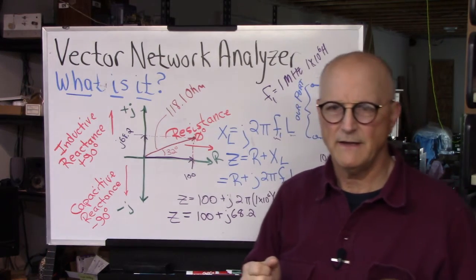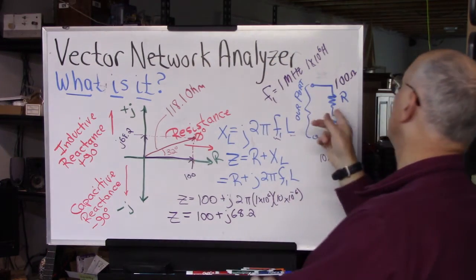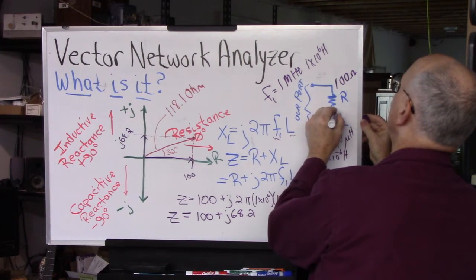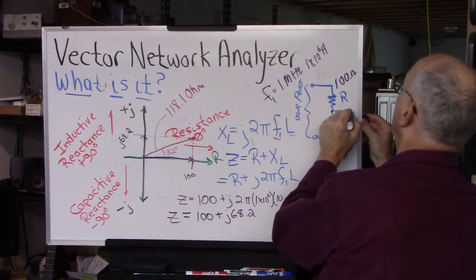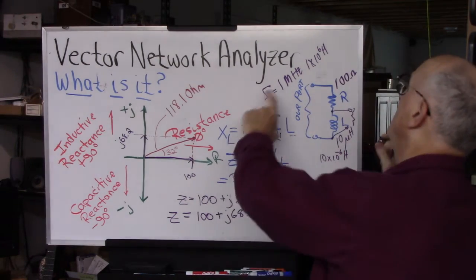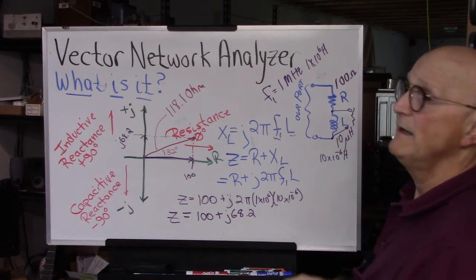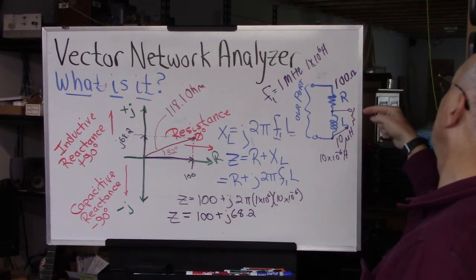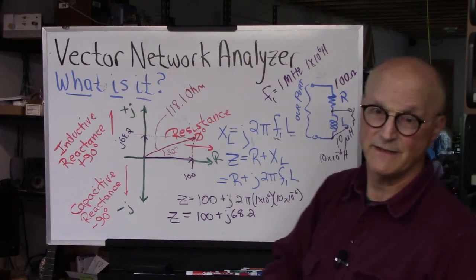Now a two port VNA can analyze a network up to two ports at a time. So we could turn this into a two port device by just simply creating a port two here. So now we have a port over here. And we could hook up our vector network analyzer, one of our ports to this side, one of our ports to this side and not only be able to look in this direction to see what this looks like, but we can look to see the response through this device as well.